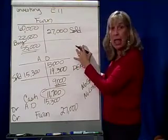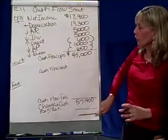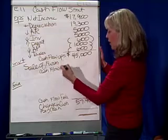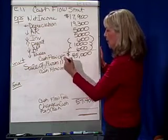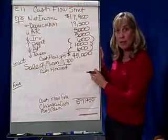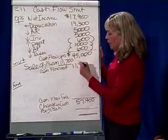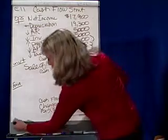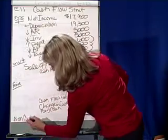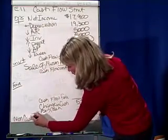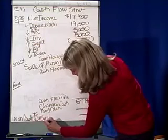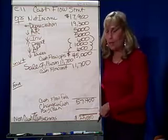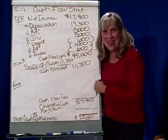So what do we do now on the statement of cash flows? We said we had a sale of furniture, and that sale of furniture gave us $11,700. As far as how much cash came in from investing activities, it was $11,700 — cash from investing, $11,700. We also said way down at the bottom we have to show our non-cash transactions, and that was $22,000. So way down at the bottom we need to show that as well. That's the investing section. Stay tuned — financing is next.